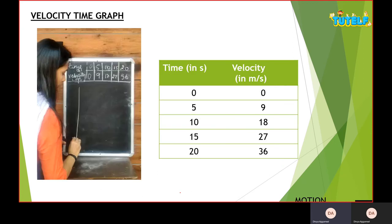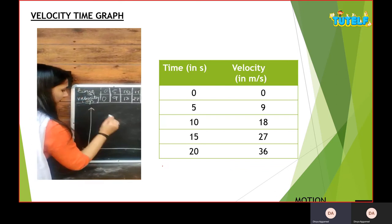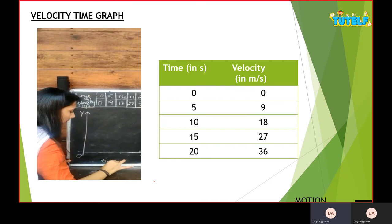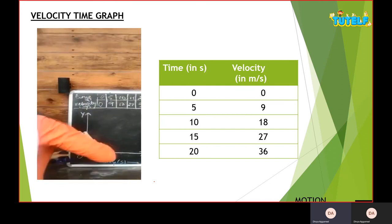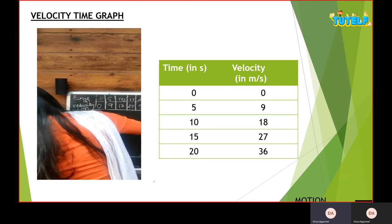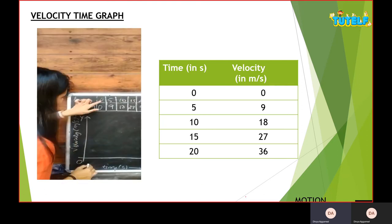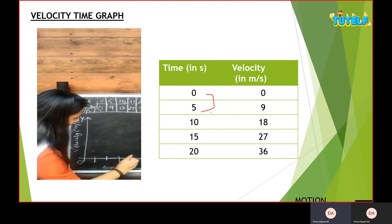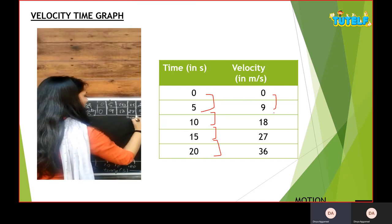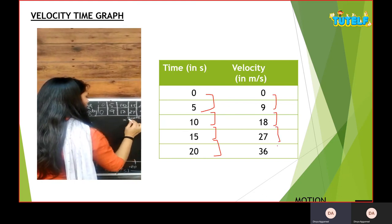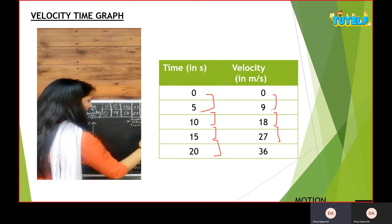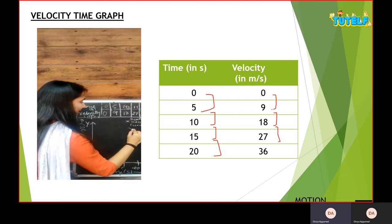Continuing with this, let's look at another graph. I have time on the x-axis with seconds and velocity on the y-axis in meters per second. The velocity has a gap of 9 and the time has a gap of 5. So the scaling is: one unit on the x-axis equals 5 seconds, and one unit on the y-axis equals 9 meters per second.